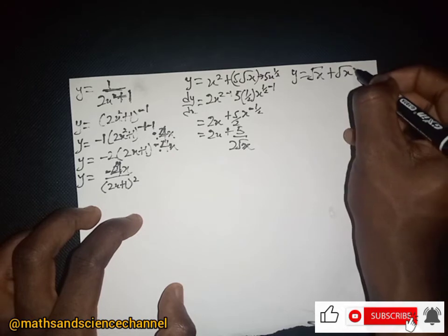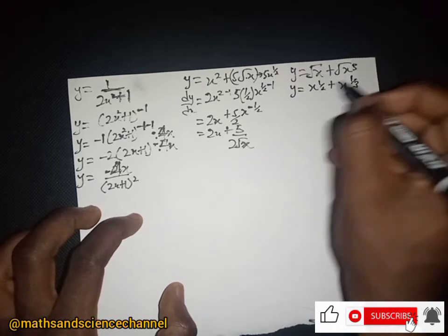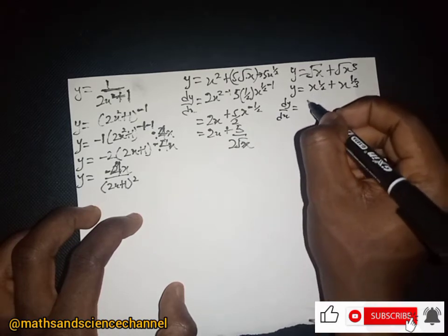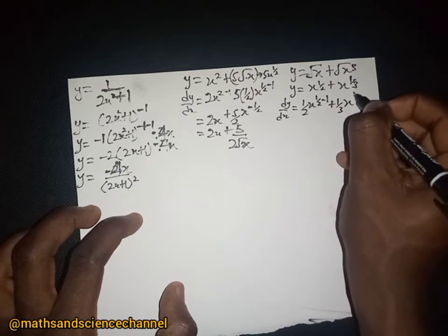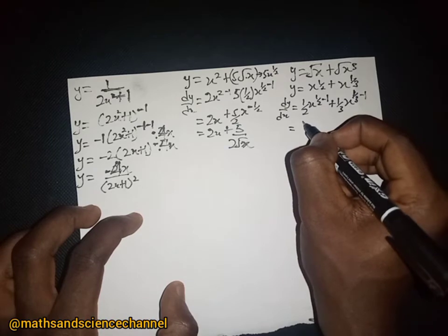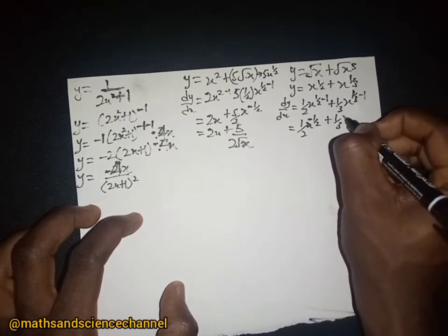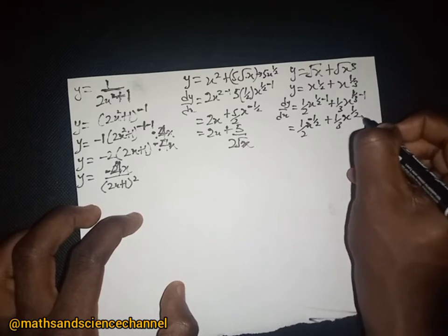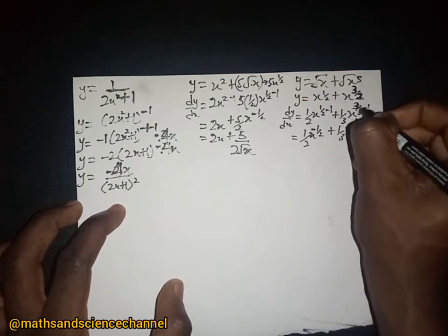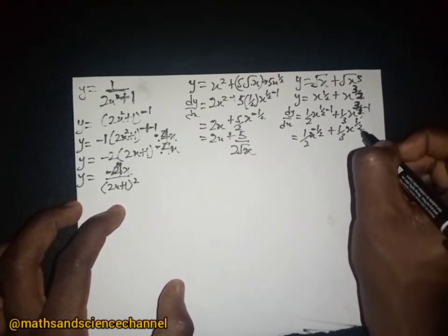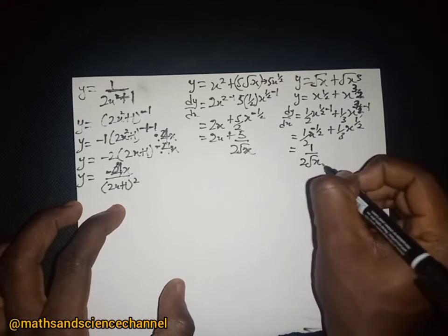Example: y equal to root x plus cube root x, written as x to the power 1/2 plus x to the power 1/3. The dy/dx — we drop 1/2 and subtract 1 from the exponent, then drop 1/3 and subtract 1 — giving 1/2 times x to the power negative 1/2 plus 1/3 times x to the power negative 2/3, which is 1 over 2 root x plus 1 over 3 times the cube root of x squared.